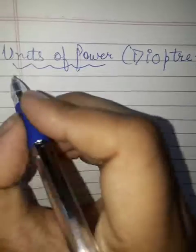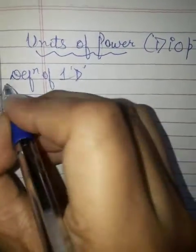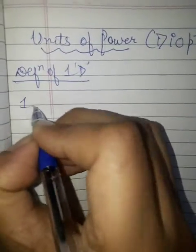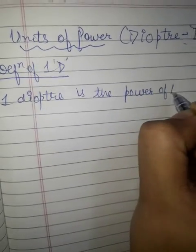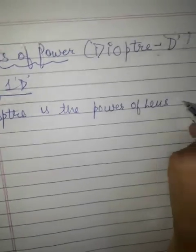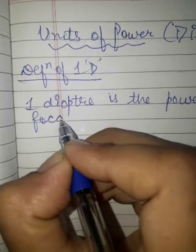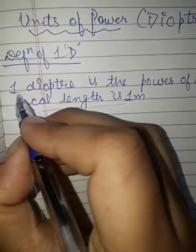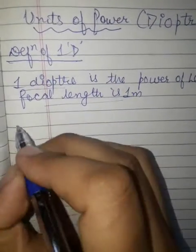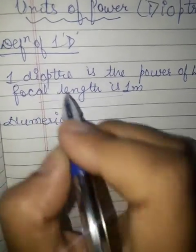The unit of power is the diopter, represented by capital D. This is a very important question in the paper: define one diopter. One diopter is the power of a lens whose focal length is 1 meter. Now we will do numericals based on the lens formula and power of lens.